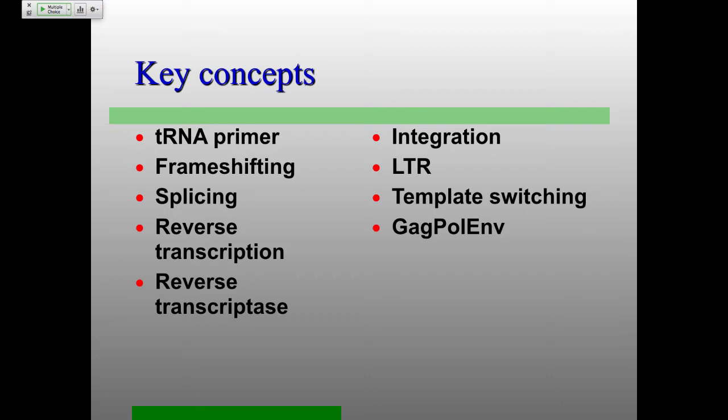Once you've done reverse transcription, you have a DNA copy of your genome. That DNA copy is worthless out in the cytoplasm because all the machinery for transcribing and splicing is in the nucleus. So you have to get that DNA into the nucleus — that's the integration process. One of the things that happens during reverse transcription is the generation of LTRs — long terminal repeats — structures in the sequence not coded in the RNA of the virion, but present in the DNA once it goes into the genome.